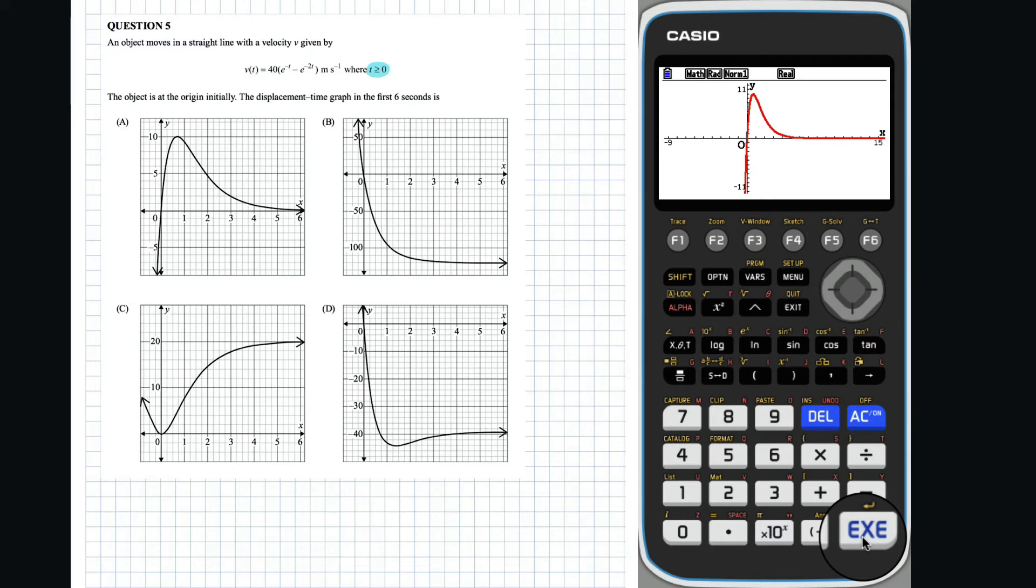From our graph, we can see that the velocity is always positive, so the object will always be moving away from the origin. If we look at our options, option C is the only graph which shows a displacement time graph that moves away from the origin for t greater than or equal to 0. So the correct answer is C.